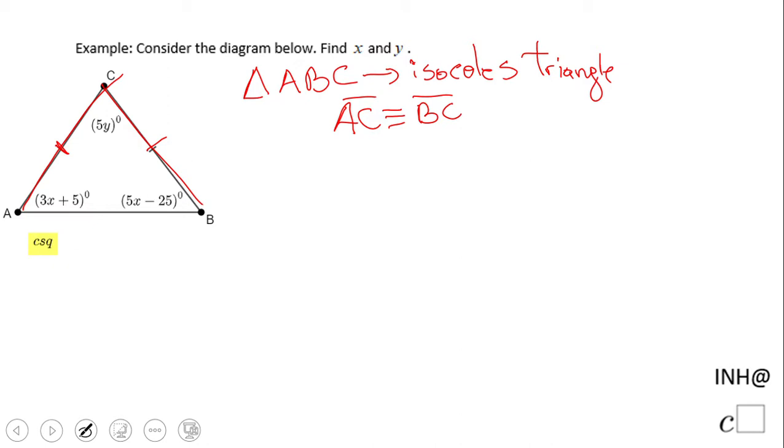The algebra here becomes 3x + 5 = 5x - 25. You may say, where did you get that? These are the angles. In an isosceles triangle, besides the sides, the base angles are also congruent, so the measures are equal.